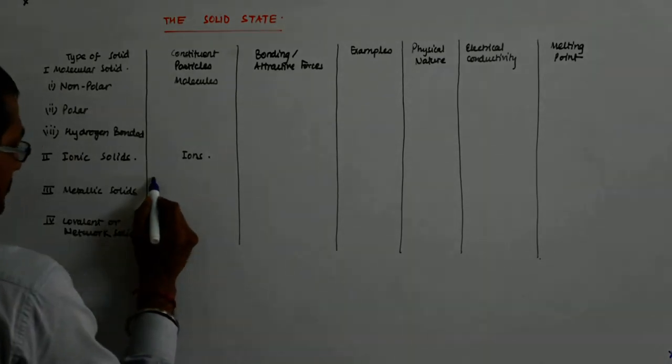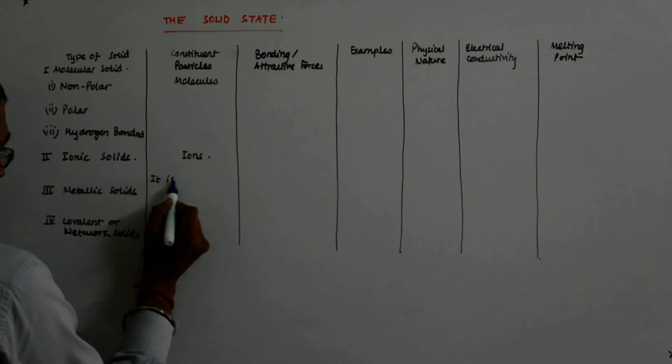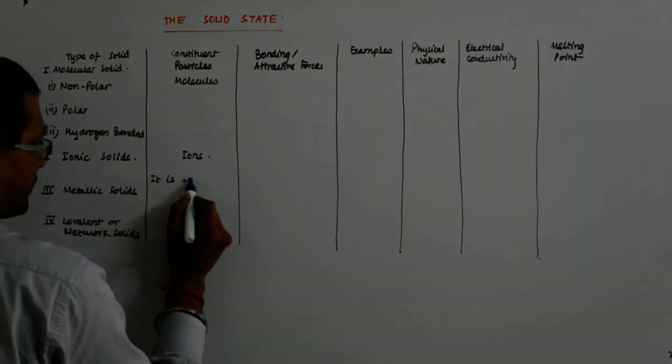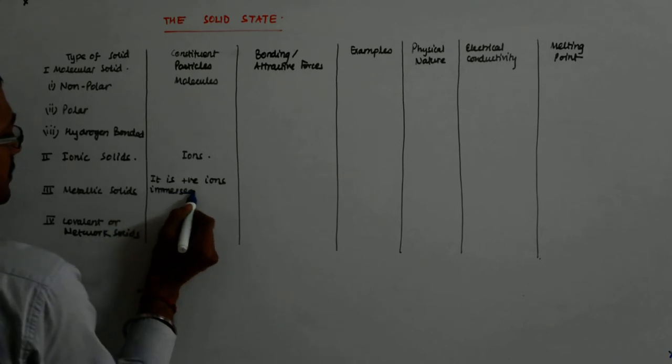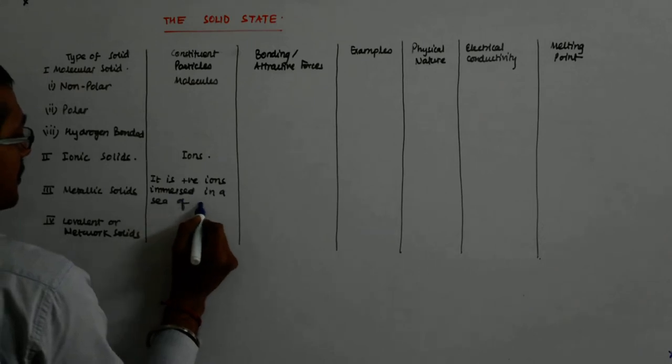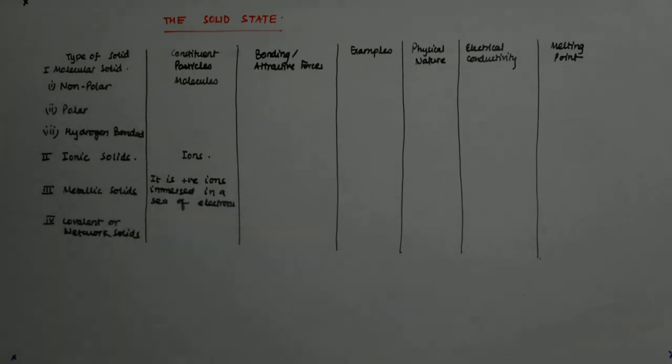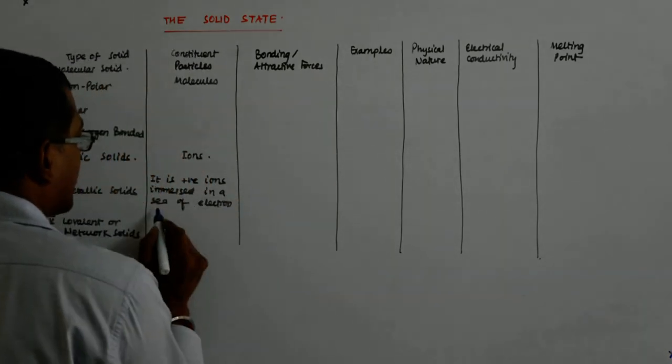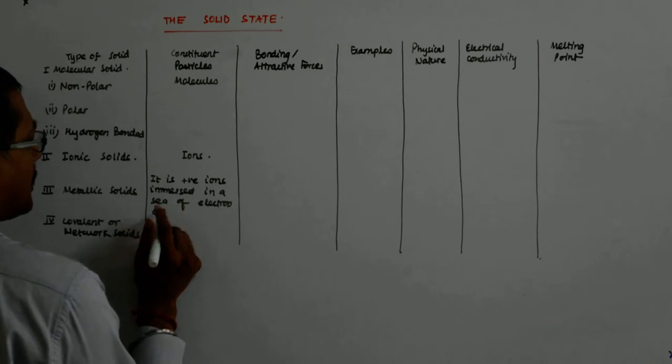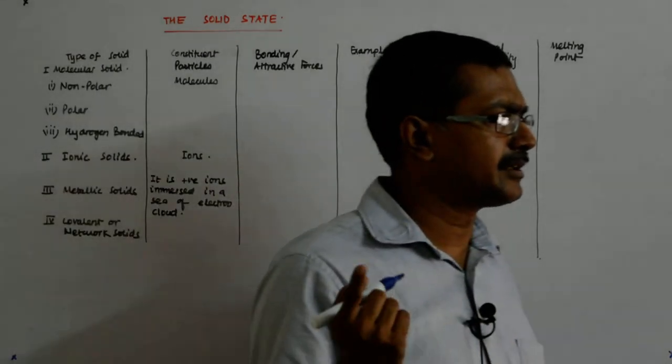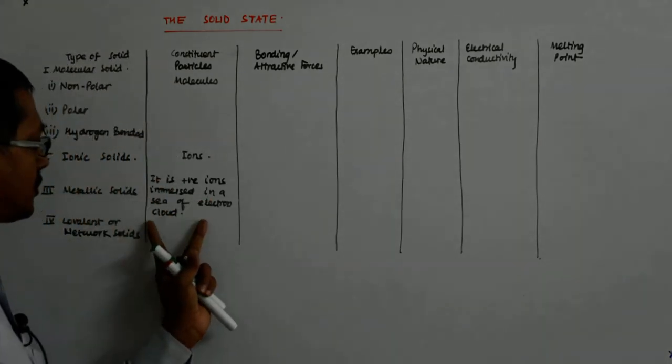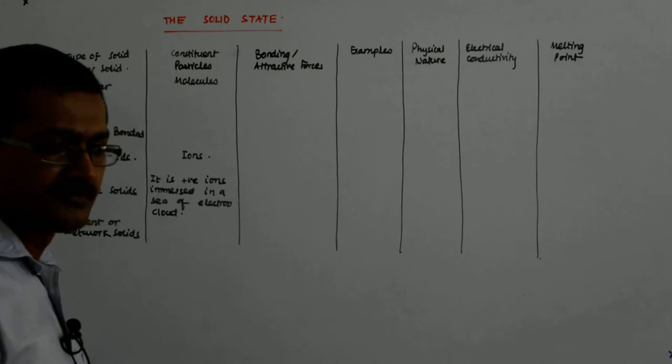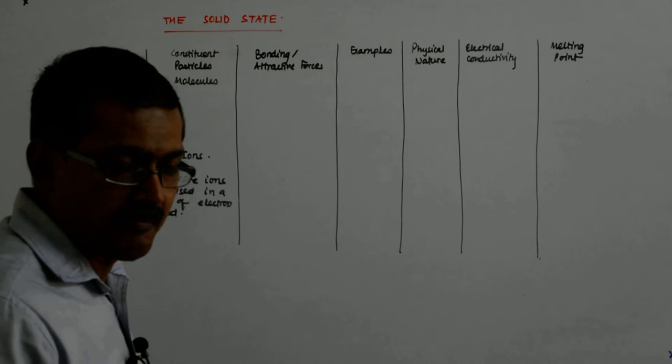So we say that it is positive ions immersed in a sea of electrons. Another thing that should be very well understood to you and that will be of some importance when we are doing the semiconductors. Though it is negative, though we are saying that it is positive ions, what is the net charge? Net charge is zero. Why is it zero?